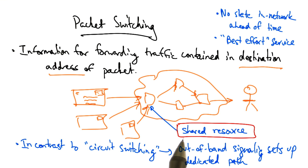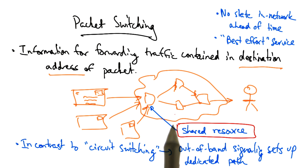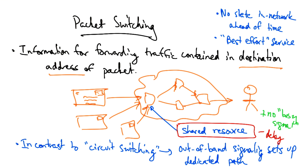An advantage of statistical multiplexing of the links in the network means that a sender never gets a busy signal. The drawbacks include things like variable delay and the potential for loss or dropped packets. In contrast, circuit switching provides resource control, better accounting, and reservation of resources, and the ability to pin paths between a sender and receiver. Packet switching provides the ability to share resources, and potentially better resilience properties.